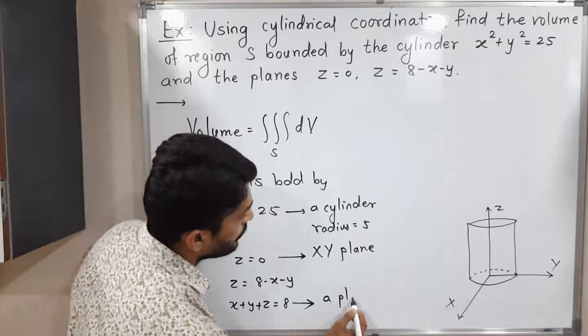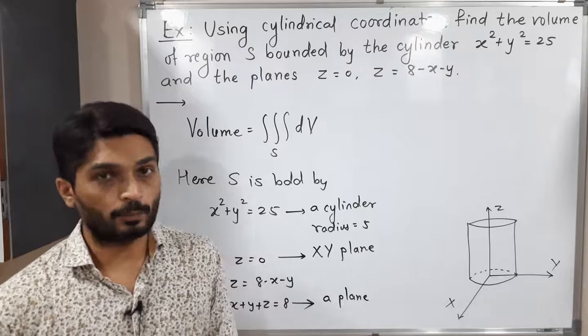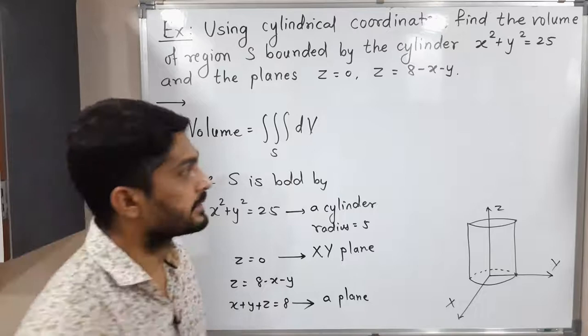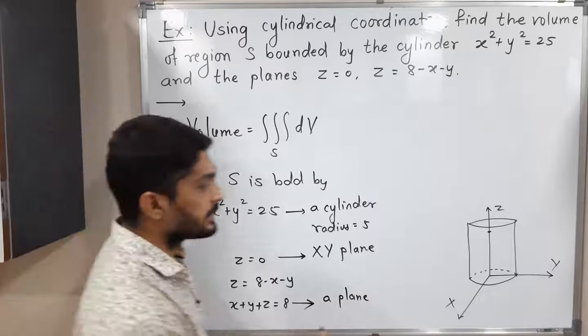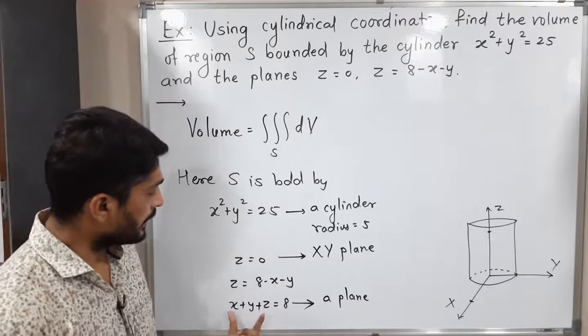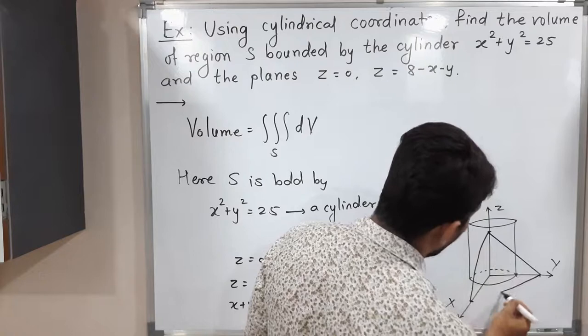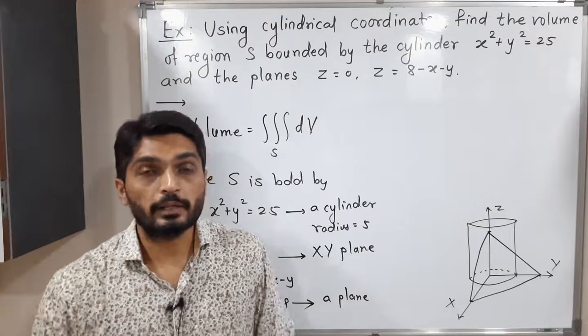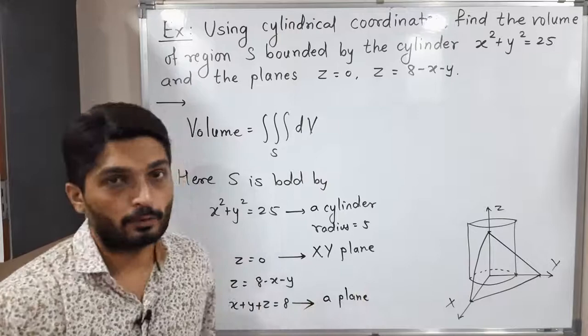This plane cuts all three axes. If I put x = 0 and y = 0, then z = 8, so it cuts the z-axis at (0, 0, 8). If y = 0 and z = 0, then x = 8, giving (8, 0, 0). If x = 0 and z = 0, then y = 8, giving (0, 8, 0). Joining these three points forms a triangular plane — that is the given plane.